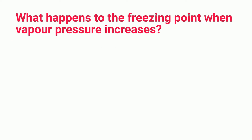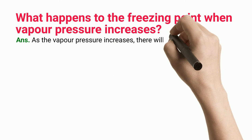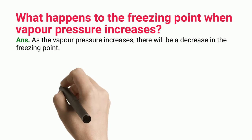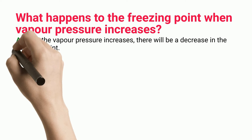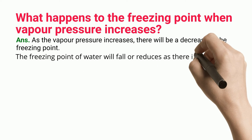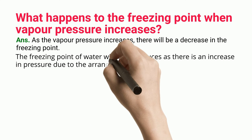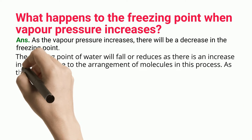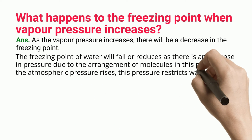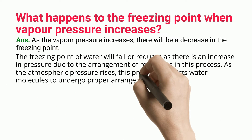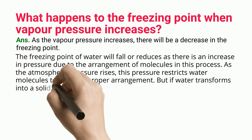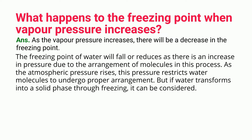What happens to the freezing point when vapor pressure increases? As the vapor pressure increases, there will be a decrease in the freezing point. The freezing point of water falls as there is an increase in pressure, due to the arrangement of molecules in this process. As atmospheric pressure rises, this pressure restricts water molecules from undergoing proper arrangement, but if water transforms into a solid phase through freezing, it can still be considered frozen.